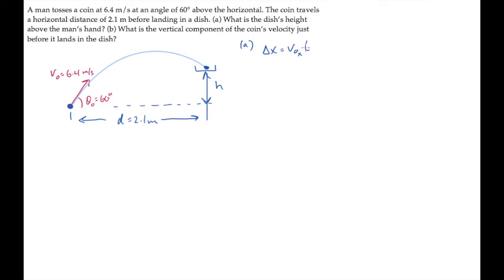In this equation, v0x is the initial x component of the velocity that's shown here. When you calculate it, you find that equals 3.2 meters per second.